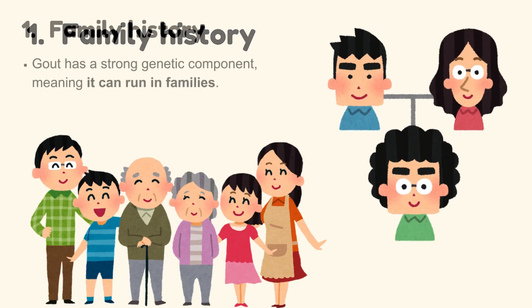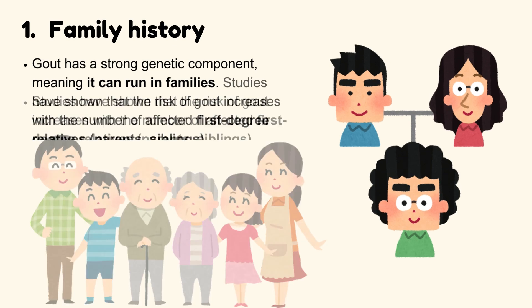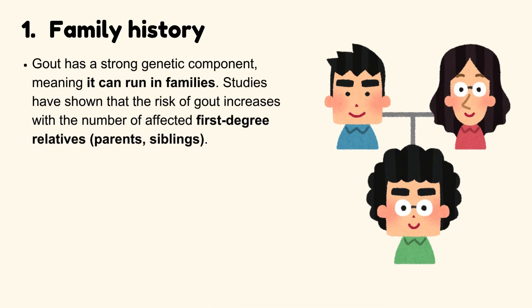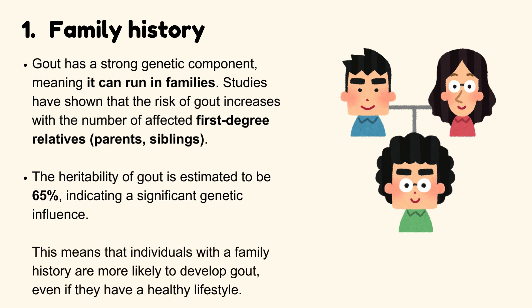Family history: Gout has a strong genetic component, meaning it can run in families. Studies have shown that the risk of gout increases with the number of affected first-degree relatives, such as parents and siblings. The heritability of gout is estimated to be 65%, indicating a significant genetic influence. This means that individuals with a family history are more likely to develop gout, even if they have a healthy lifestyle.